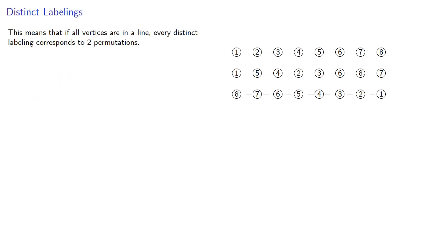This means that if all vertices are in a line, every distinct labeling corresponds to two permutations. So the number of labelings is n factorial halves, if we're dealing with a graph where all vertices are in a line.